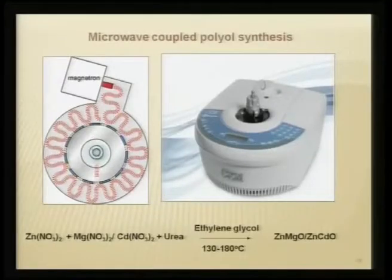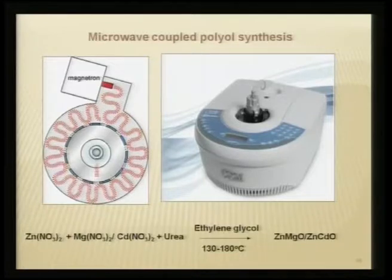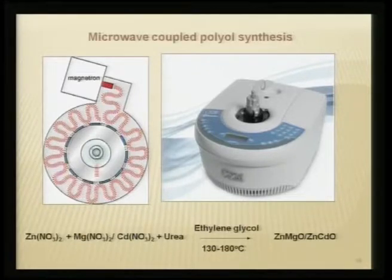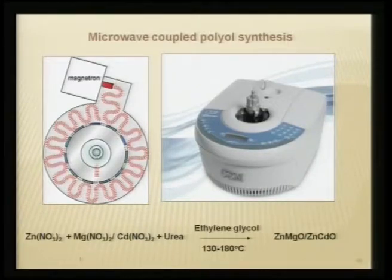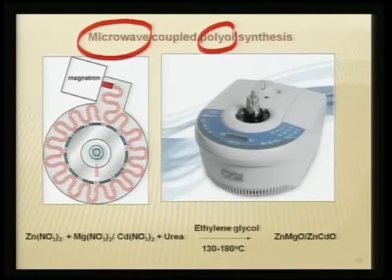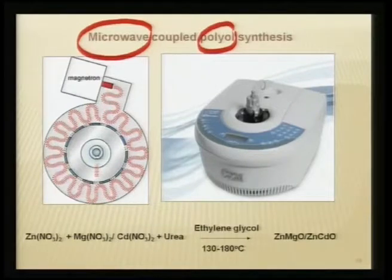Today I am going to look into another aspect of sophisticated wet chemistry routes which can be used for alloying zinc oxide. One of the most prominent methods is called microwave coupled polyol synthesis - an upcoming method which can be used for a variety of systems, not only for inorganic oxides but also predominantly in organic synthesis. What we are trying to do is use microwave and polyol to hydrolyze the zinc salt in order to get zinc oxide in a one-pot reaction.